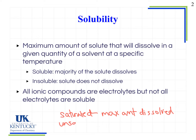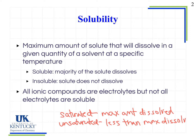An unsaturated solution means it has some value less than the maximum. So if I have an unsaturated solution, I can add more solute to it and it will still dissolve. If I have a saturated solution and I add more solute, what I will find is that a precipitate forms, meaning a solid will come out of that solution.